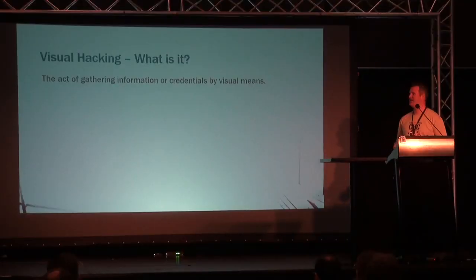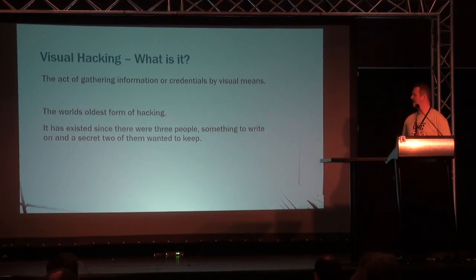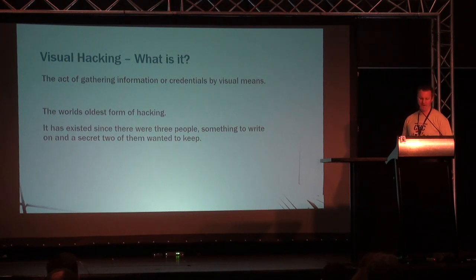So, visual hacking — what actually is it? Put very basically, it's the act of gathering information or credentials by visual means. Essentially it is the world's oldest form of hacking. Ever since there were three people and two wanted to hide something they could write down, the third person has been wanting to find out what that information is. But as we'll go through, this is much more than just shoulder surfing — this is much more involved than that. Visual hacking is a key component of internal vulnerability assessing, spy agency fieldwork, corporate espionage — any scenario where there is a desire to gather information without the risk of a digital footprint, where we're not leaving any breadcrumbs in networking infrastructure and firewalls because we're not touching them. Visual hacking can be used on its own or as part of a wider, more targeted, structured hacking campaign.